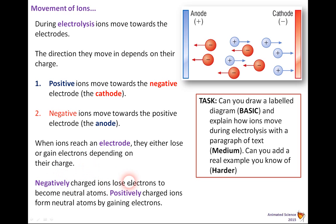Negatively charged ions lose electrons to become neutral, and positively charged ions form neutral atoms by gaining electrons. If you learn one way around, the other is simply the opposite.